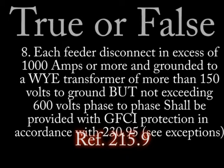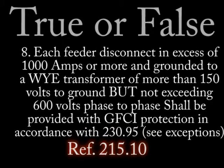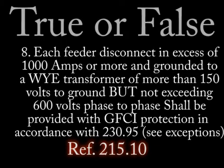Number 8: True or false — Each feeder disconnect in excess of 1,000 amps or more, and grounded to a Y-transformer of more than 150 volts to ground but not exceeding 600 volts phase to phase, shall be provided with ground fault protection of equipment in accordance with Article 230-95.